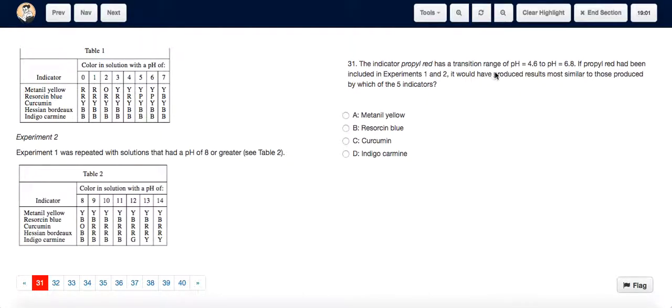For question 31, we can see that the transition range of pH mentioned is 4.6 to 6.8, so the whole numbers that come between 4.6 and 6.8 are 5 and 6. We have to check for which of the indicators pH 5 and 6 has a different color, which could be the transition color.